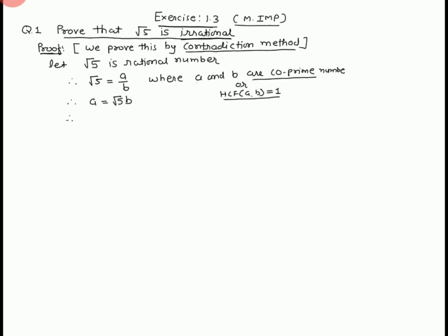Now, squaring both sides. A square equals, squaring root removes the square root, 5 times b square. This is equation number 1. We write squaring both the sides.